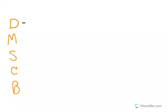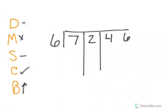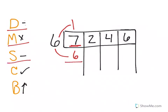We're going to try one more. Does McDonald's sell cheeseburgers? Divide, multiply, subtract, check, bring up. My next problem is 6 into 7,246. So I'm going to draw my boxes. First I want to think: 7 divided by 6. 6 will go into 7 one time. Divide. Now I multiply: 1 times 6 equals 6. Then I subtract: 7 minus 6 equals 1. Then I check — 1 is less than 6. So now I can bring it up.